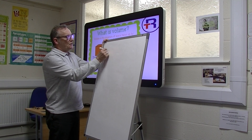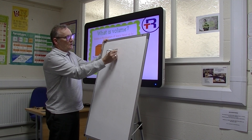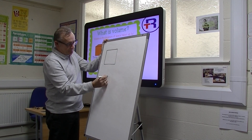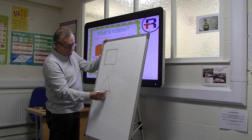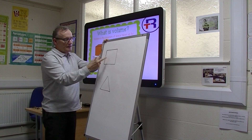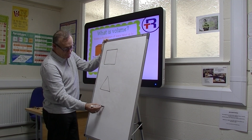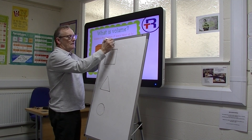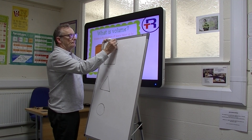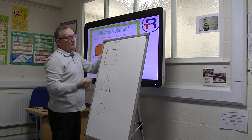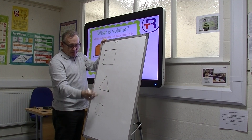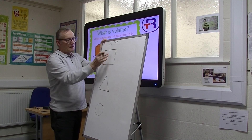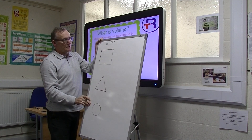So the three most popular shapes that you're going to come across are these three. You've got your rectangle or your square, you've got your triangle, or you've got your circle. And all these are just two-dimensional — 2D — flat surfaces, flat areas.